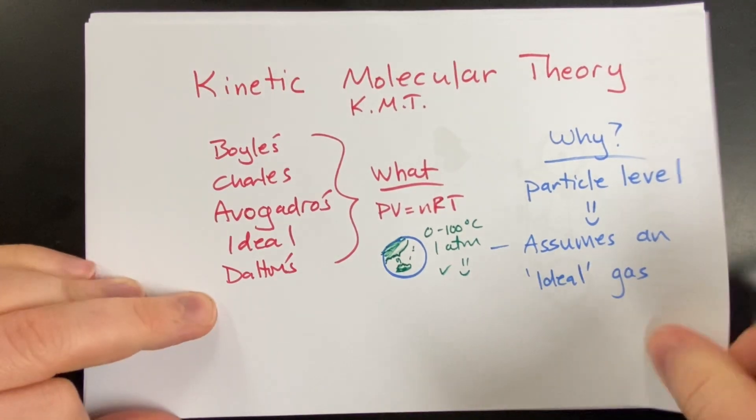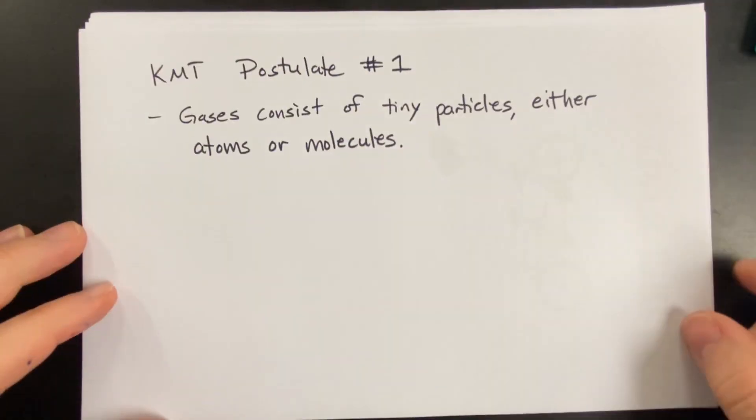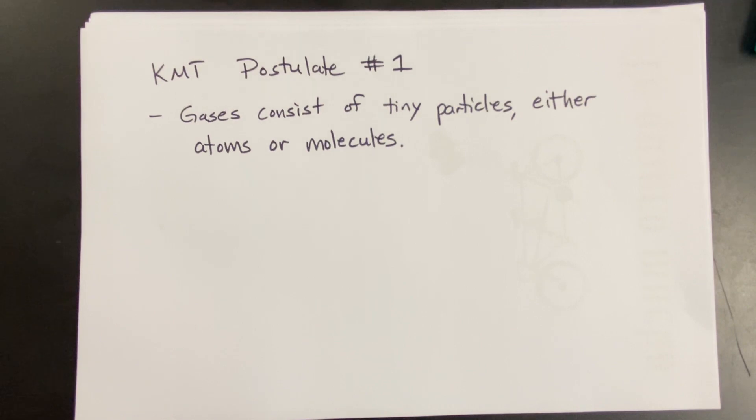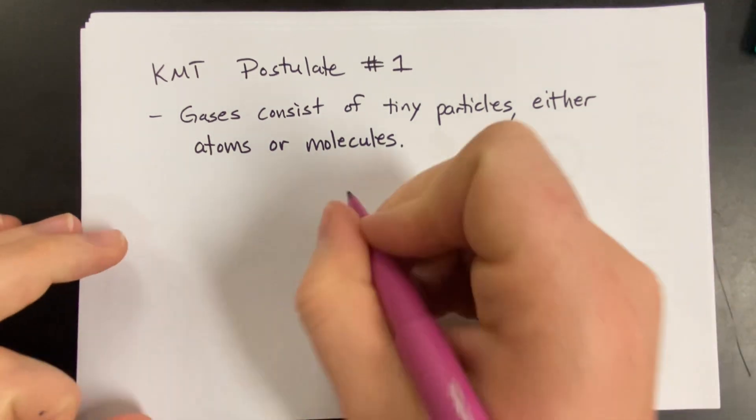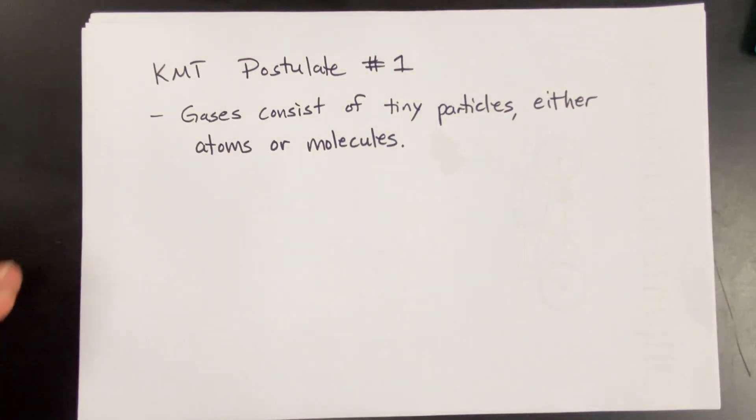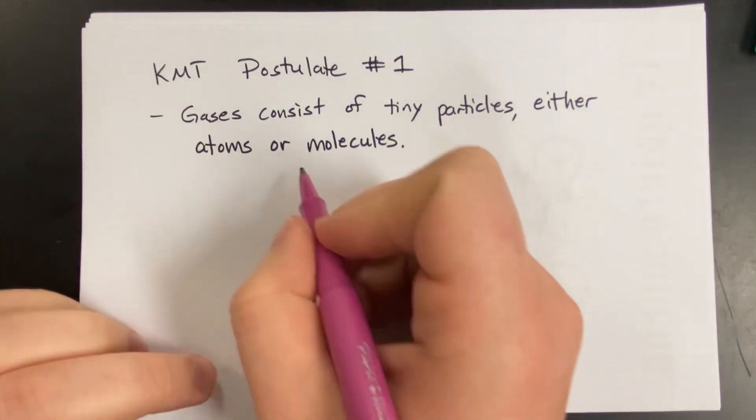All right, let's get into this theory. This theory has a total of five postulates, and yep, you're going to have to know these postulates, all right? The first one is the easiest one. KMT postulate number one. Gases consist of tiny particles, either atoms or molecules. Well, good gravy, my dear students. If you got this far in chemistry and didn't know this, I guess I have failed as a teacher.